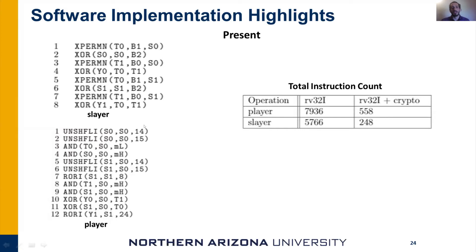In the crypto proposal, we only have unshuffle with immediate value 15. But we use 14 here to show that we can actually use 14 as well — we have room to use it. On the table, you can see the total number of instructions executed for the P-layer and S-layer using the integer set alone versus integer set plus crypto.